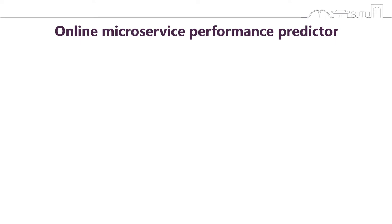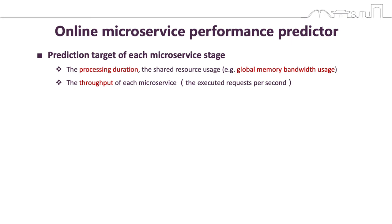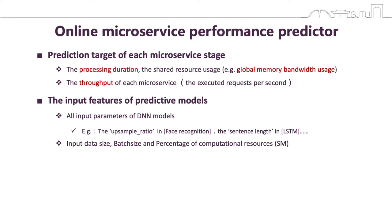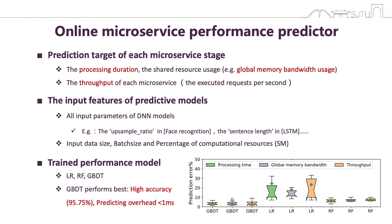In Astria, the first step is predicting GPU microservice performance. Astria predicts the processing duration, global memory bandwidth usage, and throughput of each microservice to support efficient resource allocation. Astria also predicts the FLOPs and required global memory space of microservices with different workloads. For each microservice, we use the microservice input parameters, for example the upscaling ratio in face recognition, input data size, batch size, and percentage of computational resource as input features. We evaluate three algorithms for performance prediction: linear regression, gradient boosting decision tree, and random forest. We finally choose GBDT as our performance modeling technique because it shows the highest accuracy while the prediction time is shorter than one millisecond.